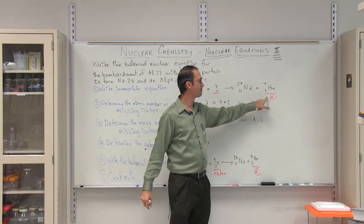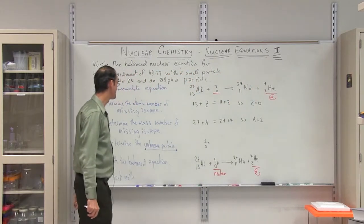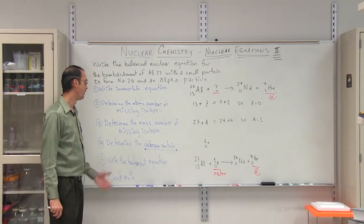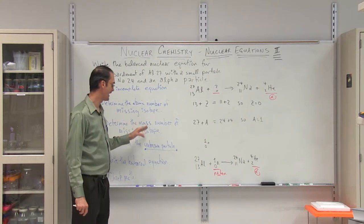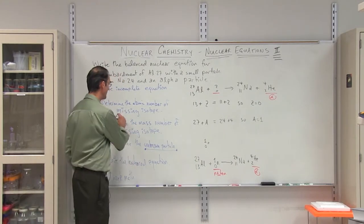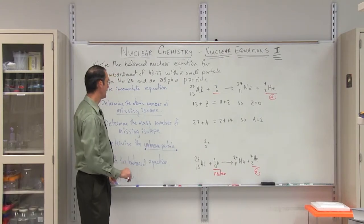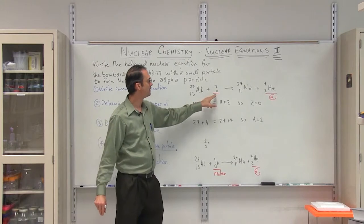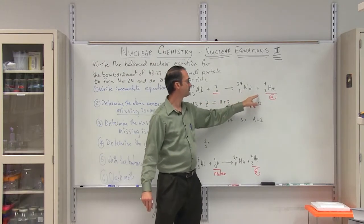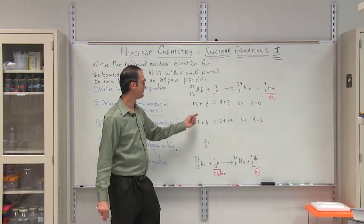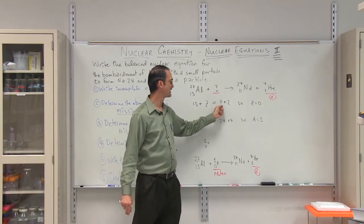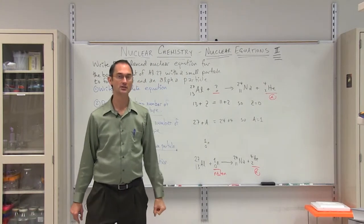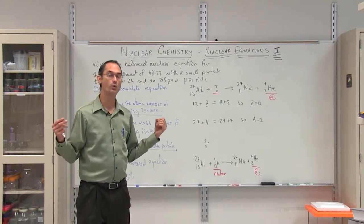The second step then is to determine the atomic number of the missing isotope, or truly the unknown particle. Well, the atomic number is going to be 13 plus some unknown Z is going to equal 11 plus 2. So the atomic number 13 plus 0 is going to give us 11 plus 2. So the atomic number is going to be 0. The resulting particle won't have a charge.